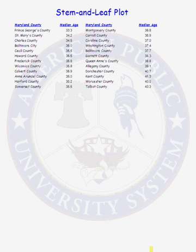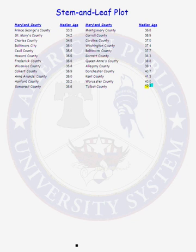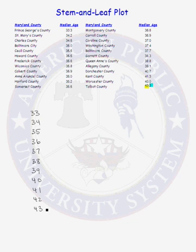When constructing the stem and leaf plot, the first thing you must decide is what part of each data value will be represented by the stem and what part will be the leaf. In our particular data set, we are going to let the integer part be the stem and the decimal part be our leaf. Our stems go from 33 years up to 43 years. Once we have our stems, draw the vertical line that will separate the stems from the leaves in our plot.